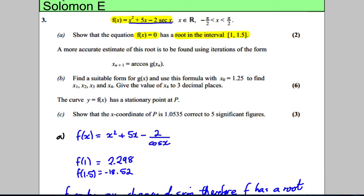Next it says a more accurate estimate of the root is found of solving f of x is 0. So a more accurate estimate is used by doing the following iterations. x n plus 1 is arccos g of x n. And it says find a suitable form of g of x and use this formula with x 0 as 1.25 to find x 1, x 2, x 3, x 4. Give the value of x 4 to 3 decimal places.